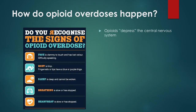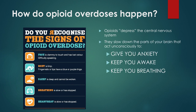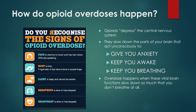Overdoses happen because opioids depress the central nervous system — they really pump up your body's ability to slow your heart rate and breathing down. A metaphorical way to put it is that they turn off the parts of your brain that give you anxiety, which is one reason people might turn to heroin without access to mental health care. But slightly longer term, they can turn down the parts of your brain that keep you awake, then turn down the parts that keep you breathing. You're not awake to notice you're not breathing. Overdoses happen when those vital brain functions slow down so much that you're not breathing at all and not pulling in enough oxygen.